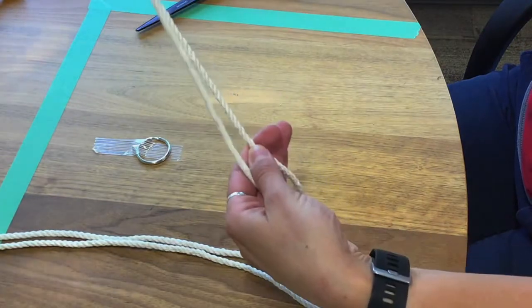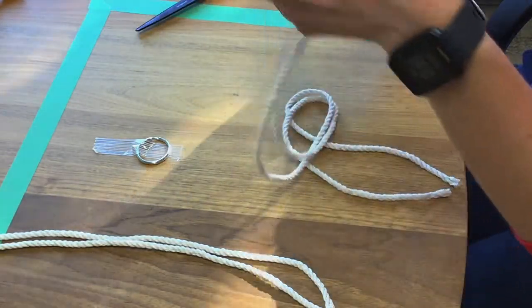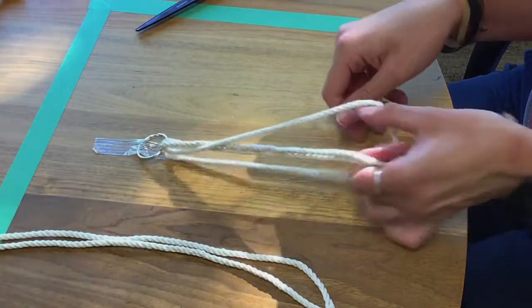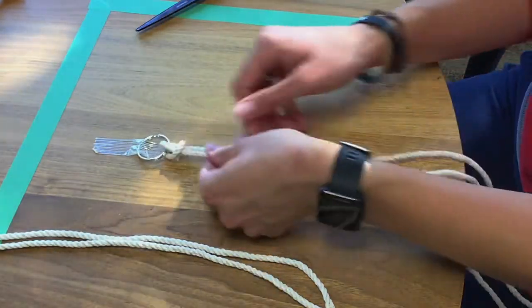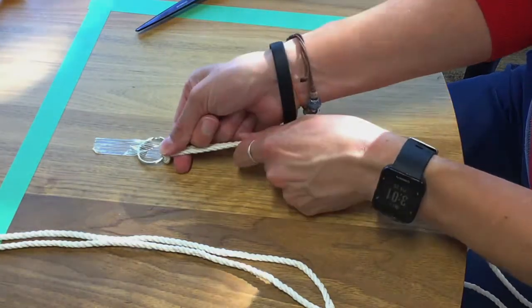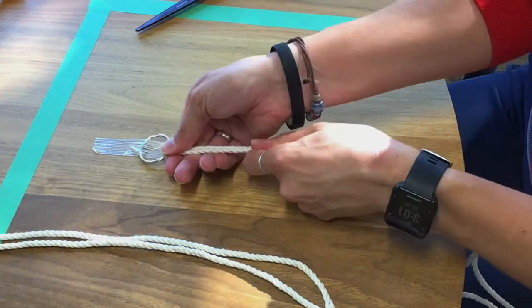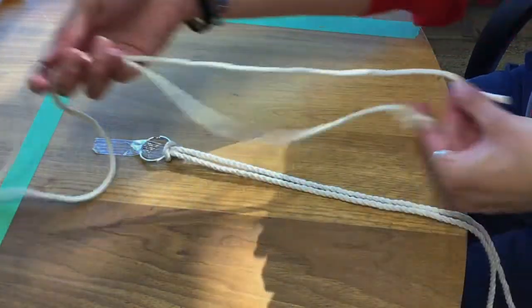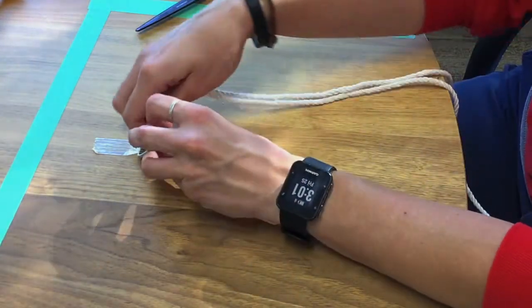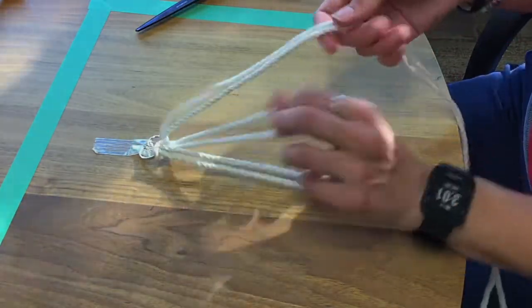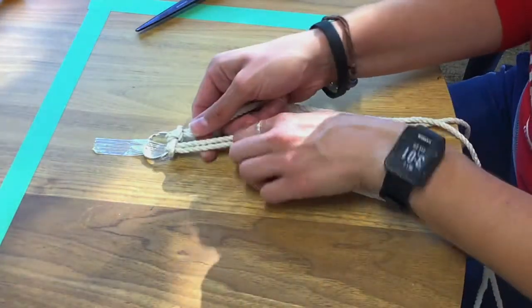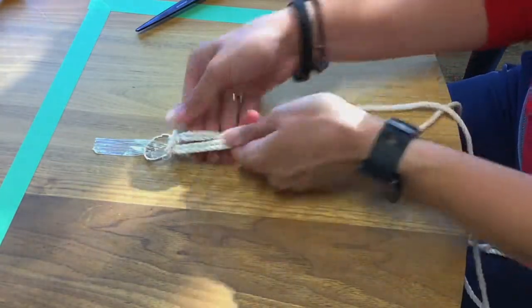We are taking one piece of the rope, folding it in half. We are going to put the loop through the jump ring to the front and then pulling the ends through that loop. We are going to do the same thing with the other piece of rope. Make sure it's tight to the jump ring.